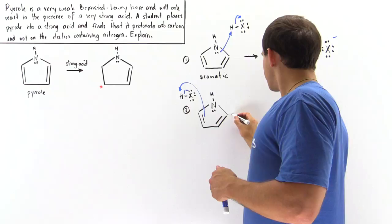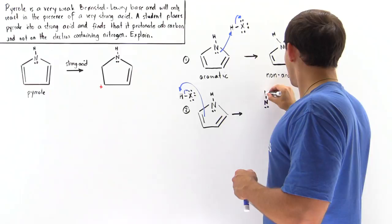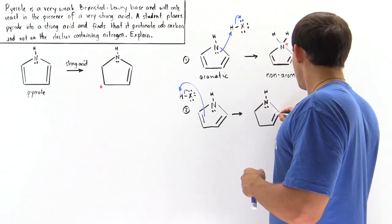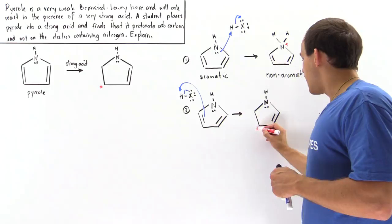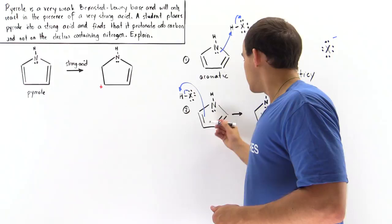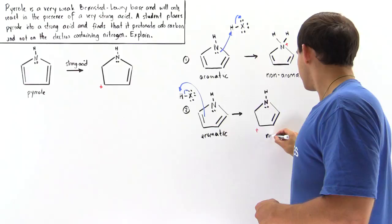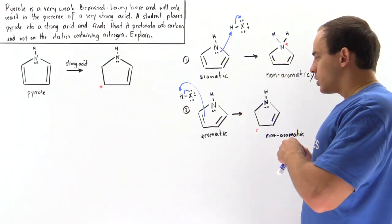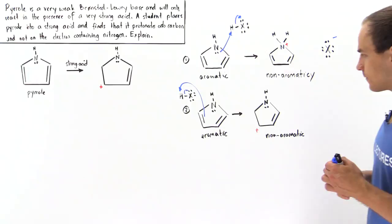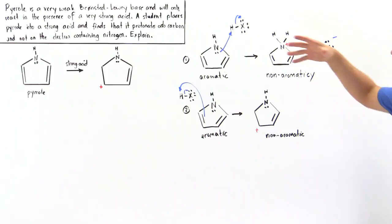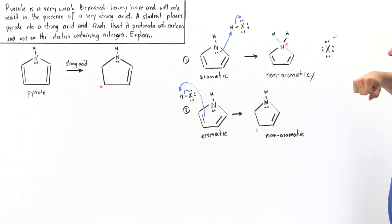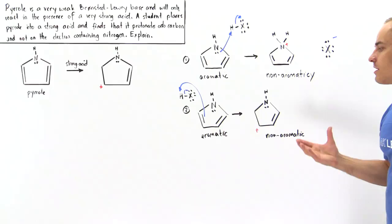Once this step occurs, we form an intermediate where the nitrogen retains its lone pair of electrons, there is now only one pi bond remaining, and the carbon that accepted the H becomes sp3 hybridized with a positive charge. This intermediate is non-aromatic. By contrast, when nitrogen is protonated, there is no resonance stabilization available — the pi bonds cannot go anywhere, and the orbitals of the nitrogen atom are all used up.